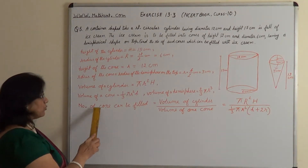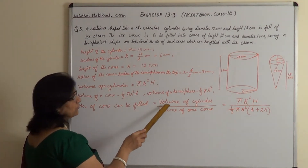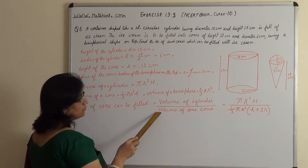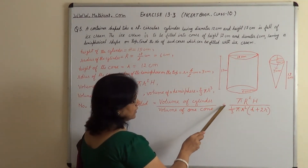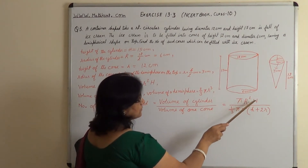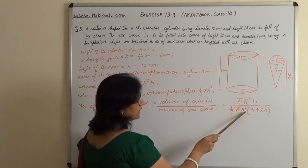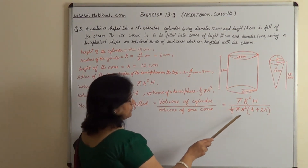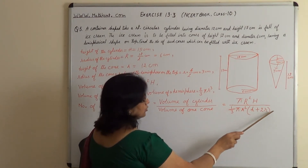Number of cones which can be filled is equal to volume of cylinder divided by volume of one cone. When we write it in formula it becomes π R² H upon (1/3) π r², taking the cone and hemisphere terms together as h plus 2r.